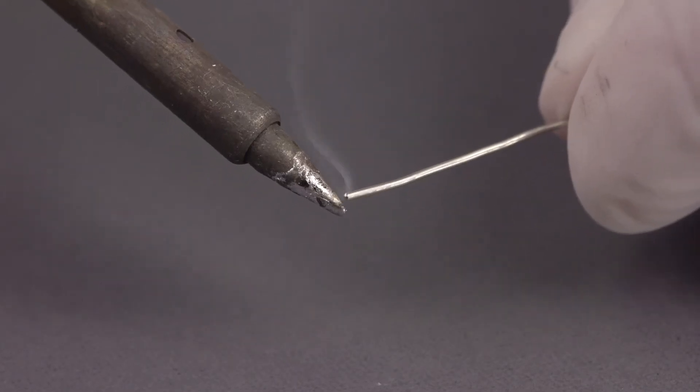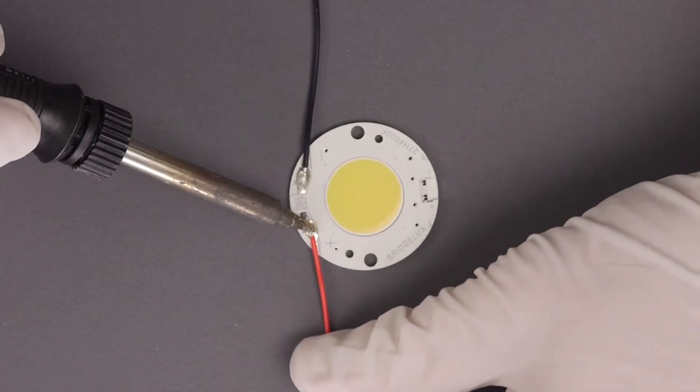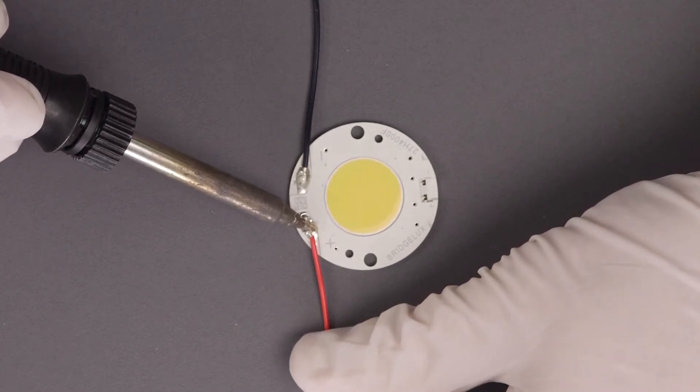Once more, pre-tin the iron. Place the pre-tinned wire tip on the pre-tinned solder pad and hold securely. Place the hot tip of the soldering iron on top of the tinned wire end.